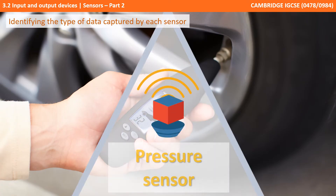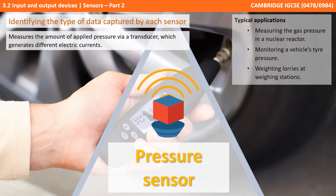Next up we have pressure sensors. These measure the amount of pressure applied to them by way of a transducer which generates different electrical currents. They can be used for measuring gas pressure in a nuclear reactor, monitoring vehicle tyre pressure, or weighing lorries at weighing stations.